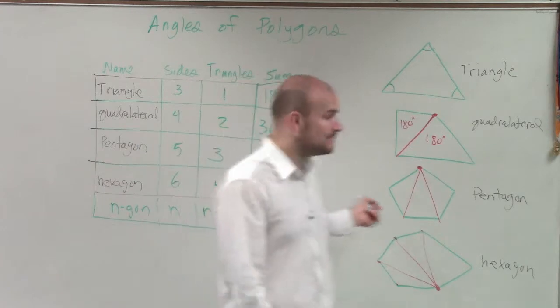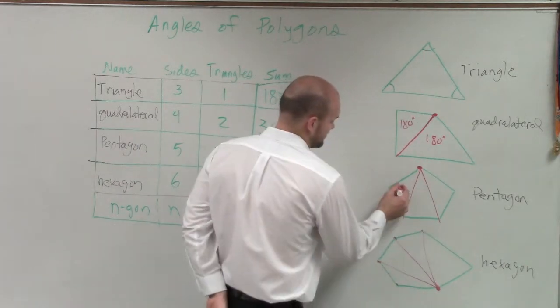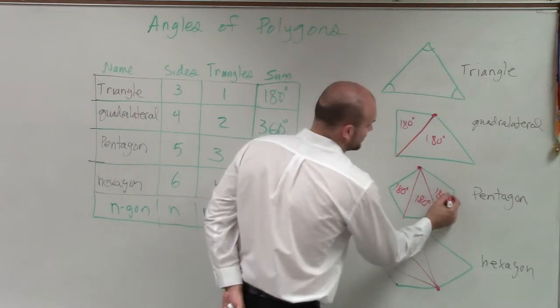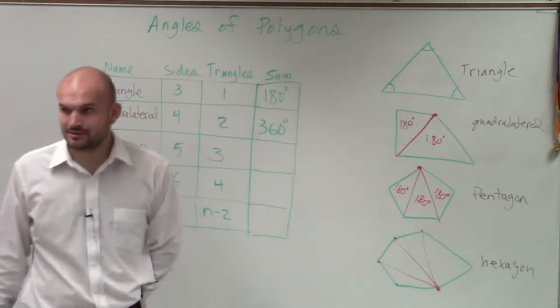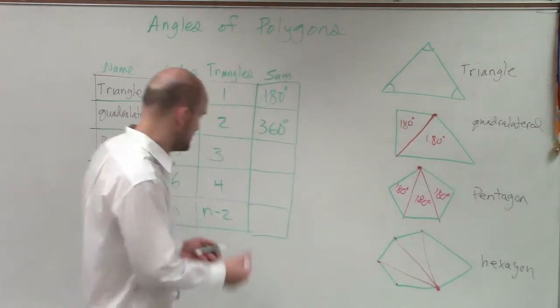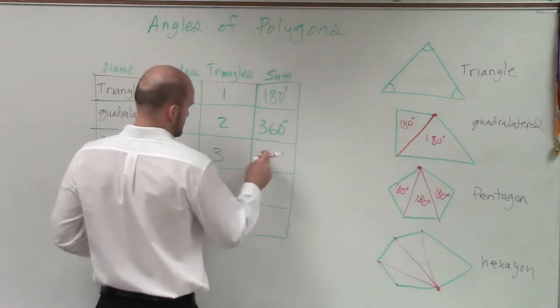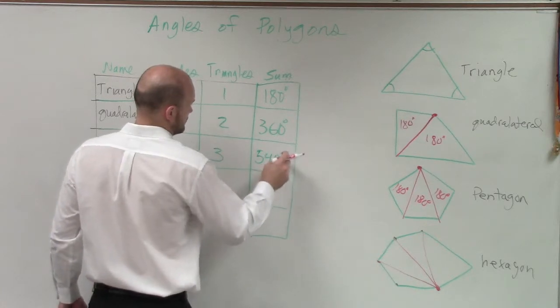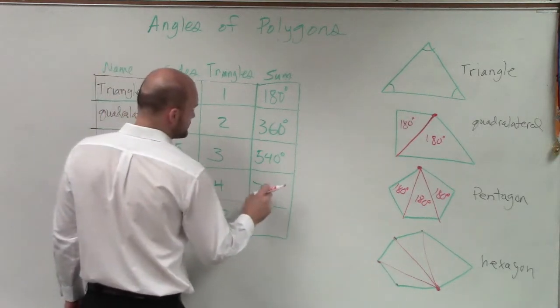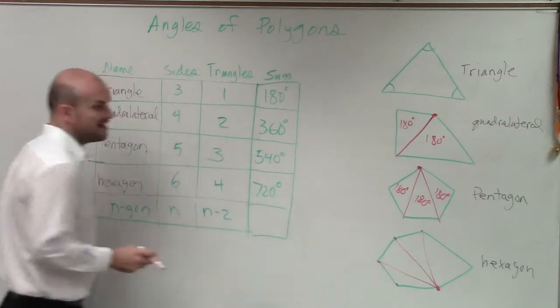Then we have a pentagon. On our pentagon, we have three triangles. So now, I need to do 180 times three. And 180 times three is going to give us what? 540. All right? And then for a hexagon, we're going to have 720.